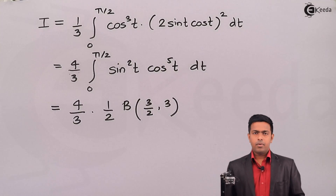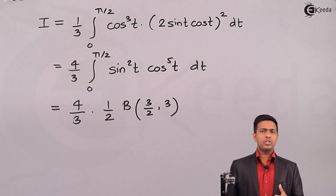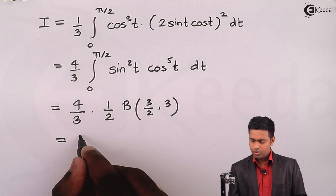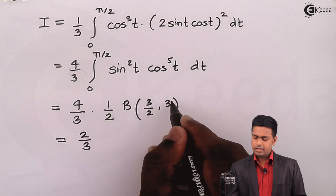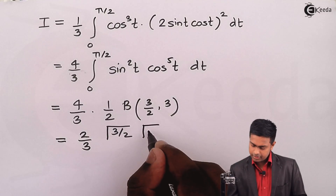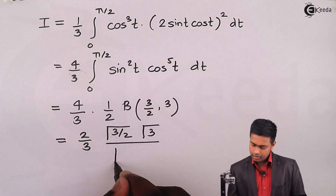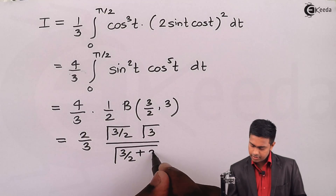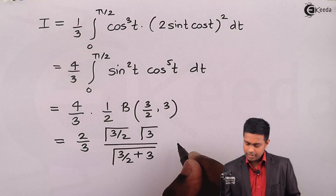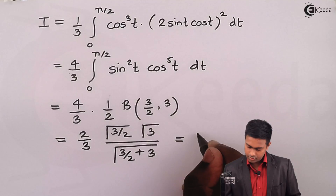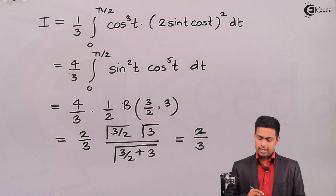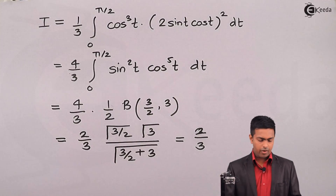Now let's solve the beta function using the relationship between beta and gamma. β(3/2, 3) = [Γ(3/2) · Γ(3)] / Γ(3/2 + 3) = [Γ(3/2) · Γ(3)] / Γ(9/2). So the expression becomes (2/3) · [Γ(3/2) · Γ(3)] / Γ(9/2).